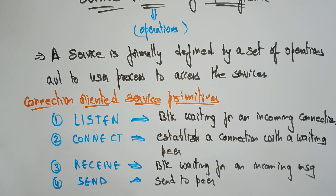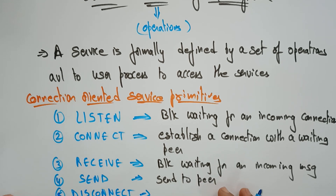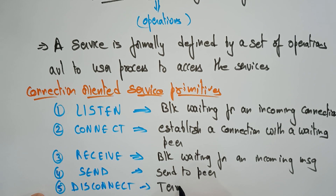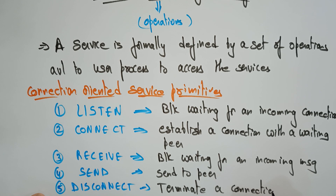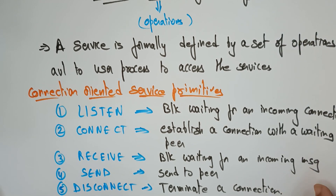The final operation for the connection-oriented is DISCONNECT. After performing every operation, we need to terminate the process — that is, terminate a connection. These are all the different connection-oriented service primitives.